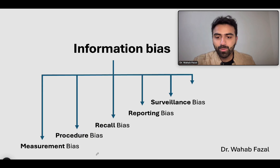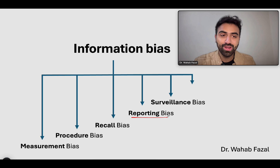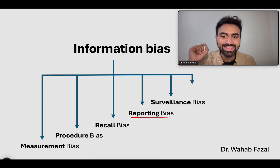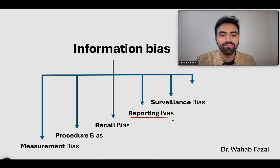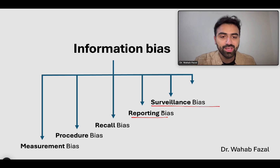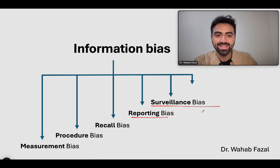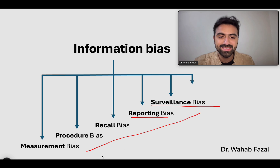When you surveil one group more than the other, you introduce surveillance bias. Looking at the chart: reporting bias — reporting results incompletely because you have a motive; surveillance bias — screening one group more than the other. All of these names are very self-explanatory of what the bias actually is.